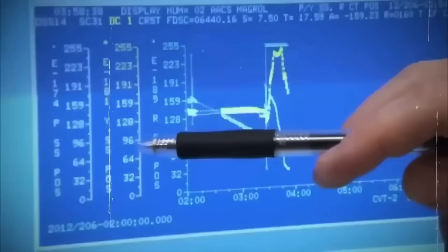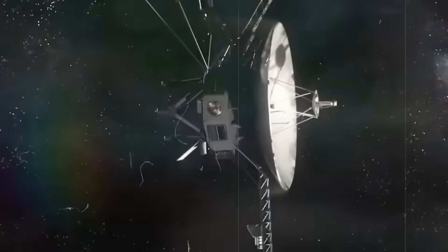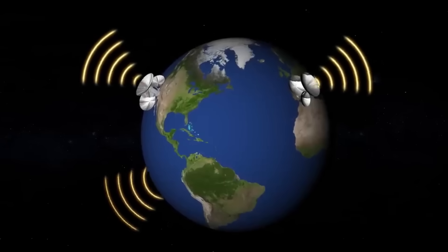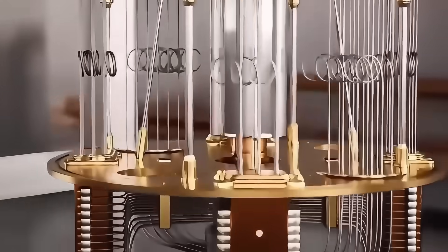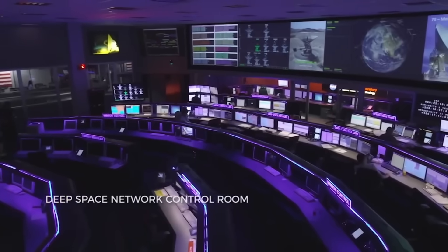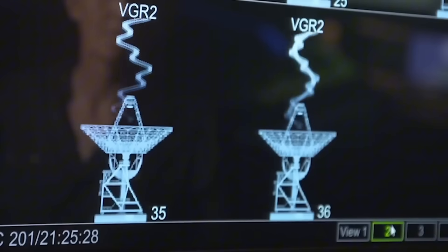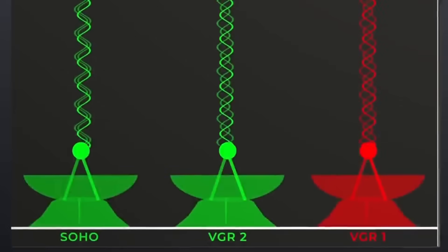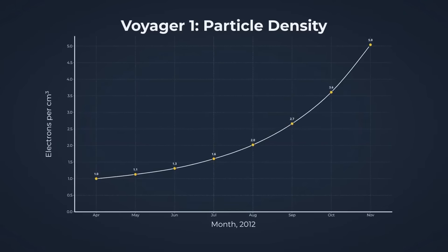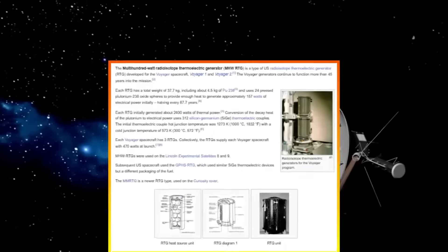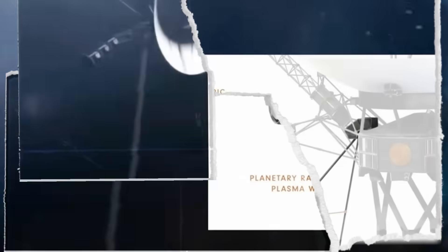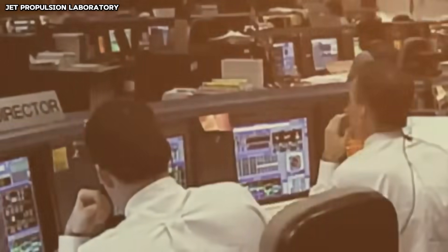But here's where things get even stranger. The quantum chip's detection wasn't just structure. It resembled waveforms already familiar to us on Earth. The golden record connection. The patterns detected in Voyager's signal bear an uncanny resemblance to fragments of waveforms from the golden records audio tracks. This connection stunned researchers. The same spacecraft carrying Earth sounds to the stars appeared to be sending similar patterns back to us. Was this a coincidence? Possibly. Could it be engineering redundancy from the 1970s NASA team? Perhaps. Or might it represent some form of cosmic reflection, our message echoing back to us after interacting with interstellar space?